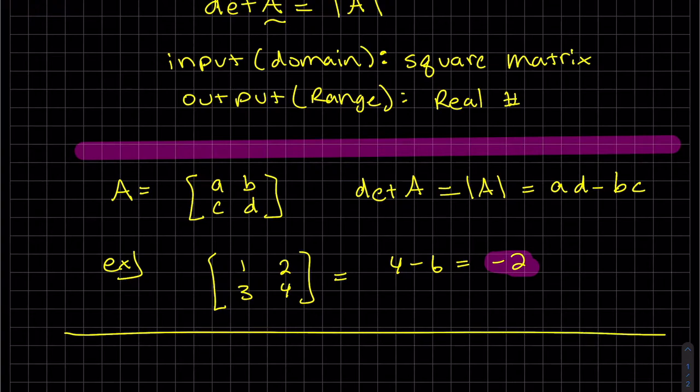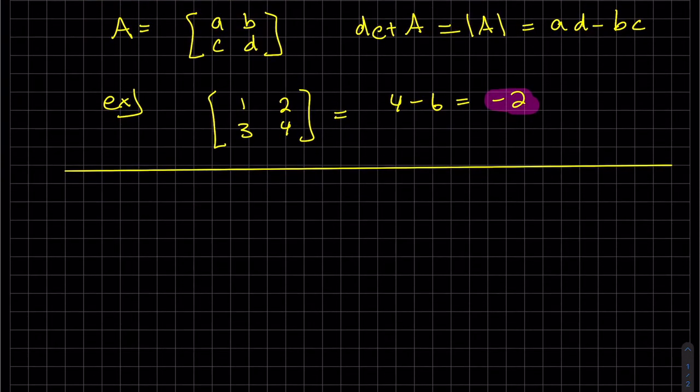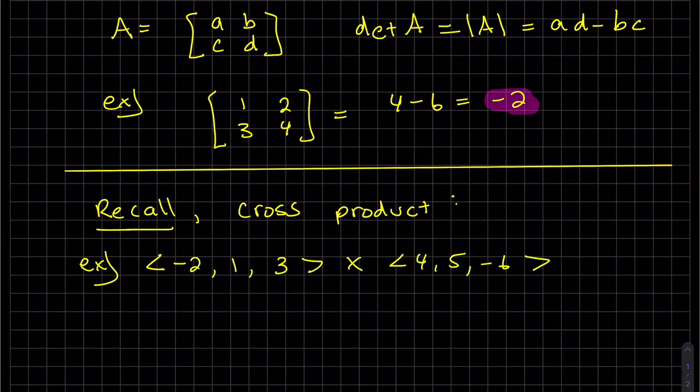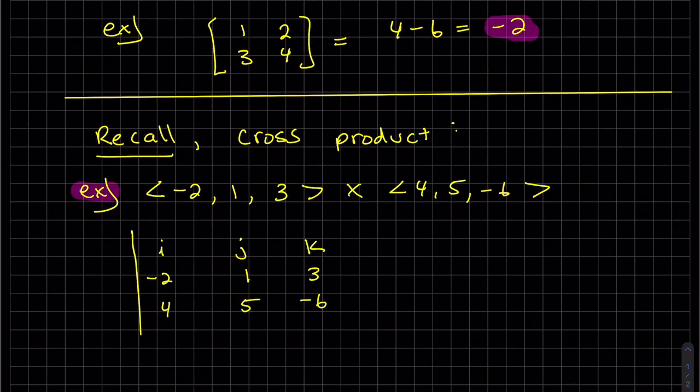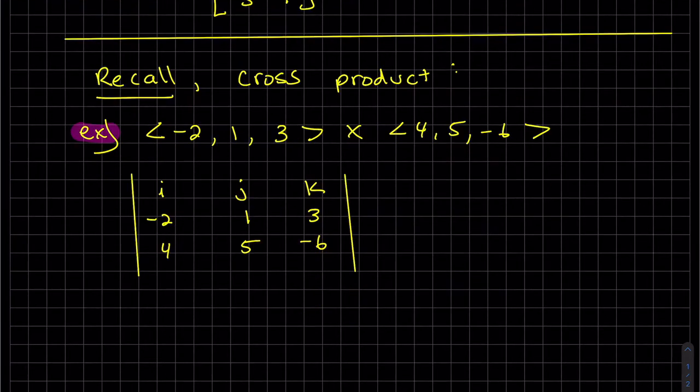So before we go to a bigger size matrix, I'm going to have you recall the cross product from Calc 3. Let's do an example. For a dot product of two vectors, you get a constant. But for a cross product, you get another vector. The process is identical to the cross product. And maybe you've never noticed it, but it does have the determinant signs on it too, on the outside.